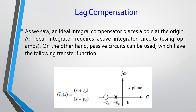So what is a lag compensator? If you understand how a PI controller works, it's very similar, except that we are not going to place the pole at the origin itself, but very close to the origin. And of course, we need to have a zero as well. So if you imagine a controller having a pole close to the origin and a zero also close to the origin, you get this kind of configuration for your lag compensator.